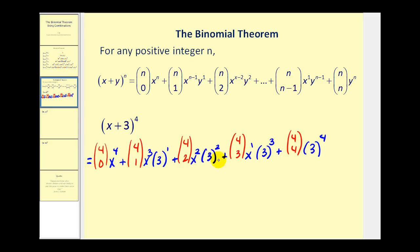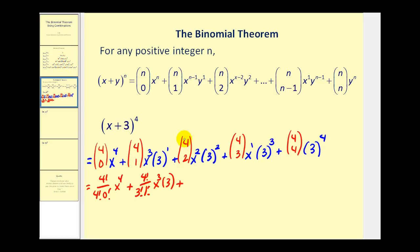When we find these products, this will be the expansion of this binomial. Four choose zero would be four factorial over four factorial times zero factorial, times x to the fourth. Plus, four choose one would be four factorial over three factorial times one factorial, times x to the third times three. Plus, four choose two would be four factorial over two factorial times two factorial, times x squared times three squared, which would be nine.